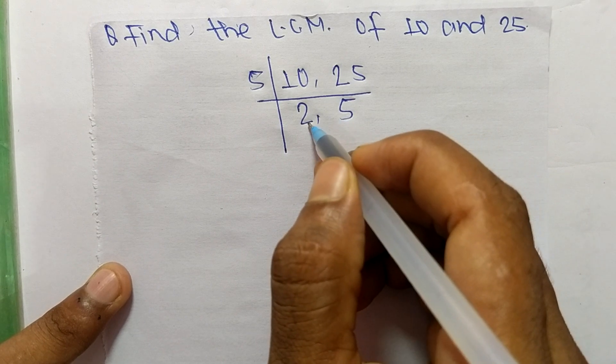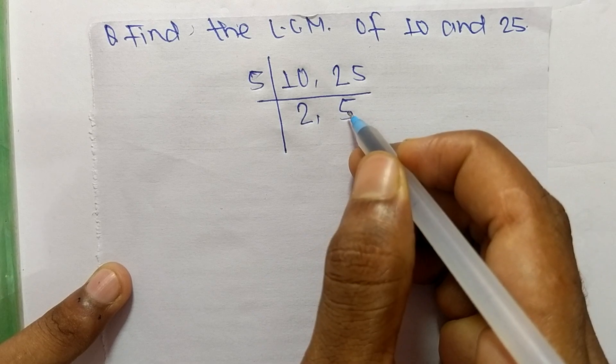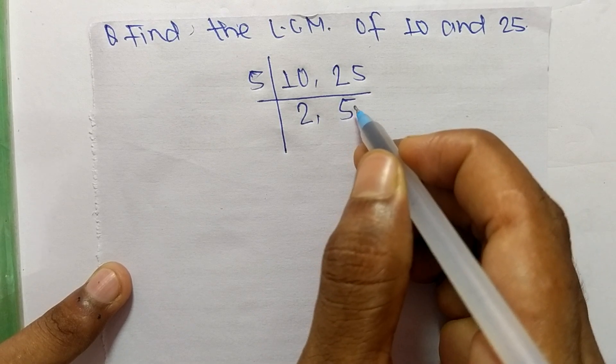When we take 2 then 2 can divide 2 but can't divide 5 and when we take 5 then it can divide 5 but can't divide 2.